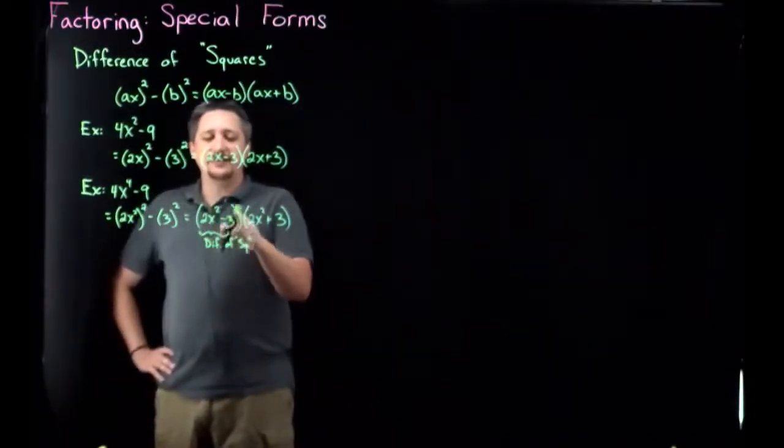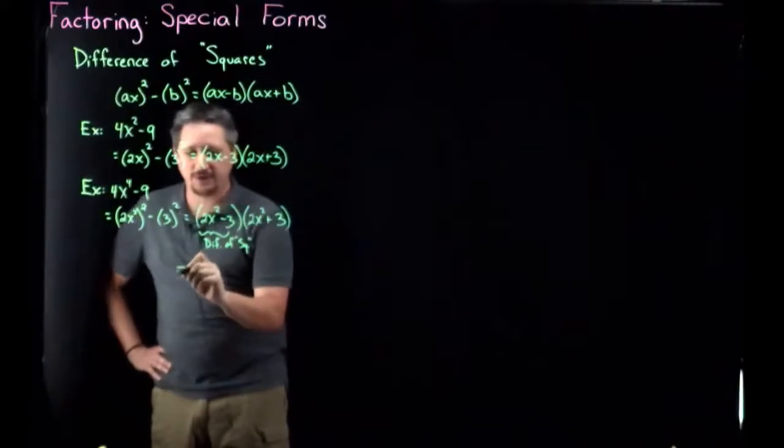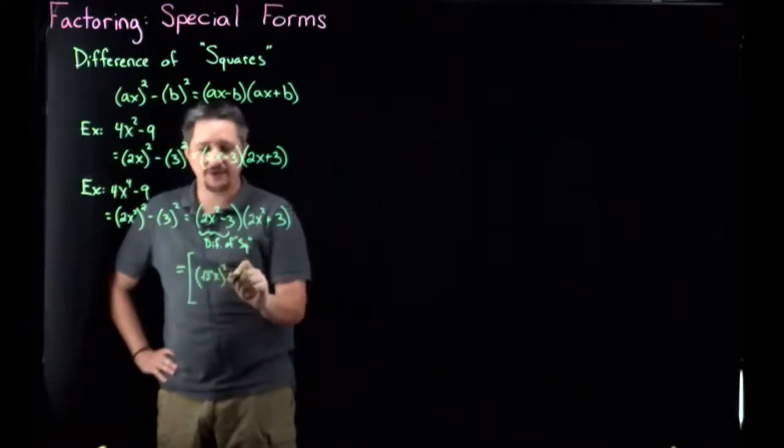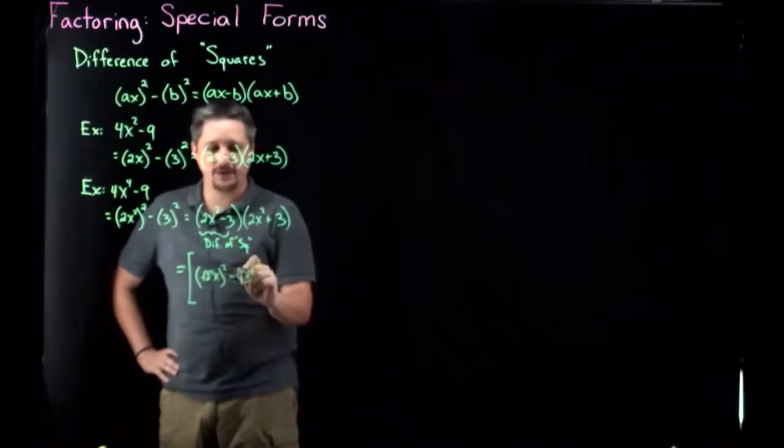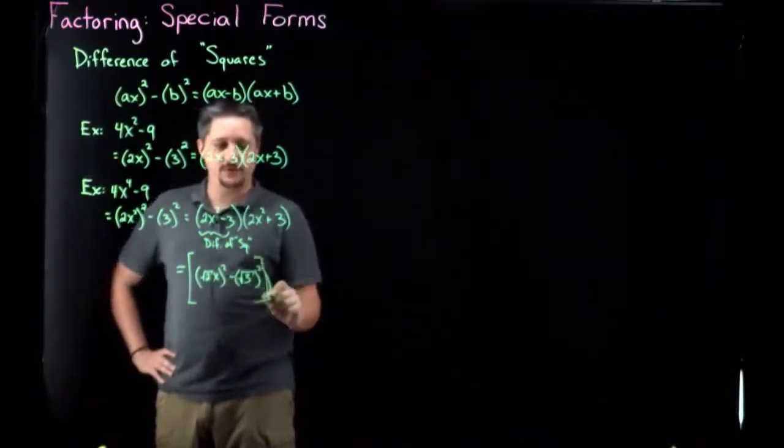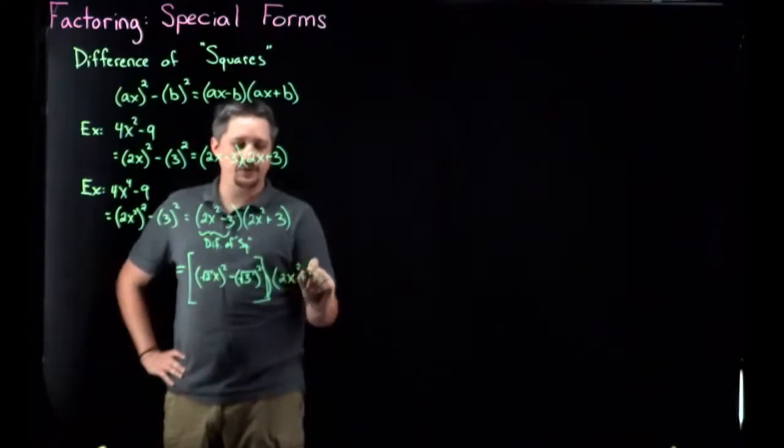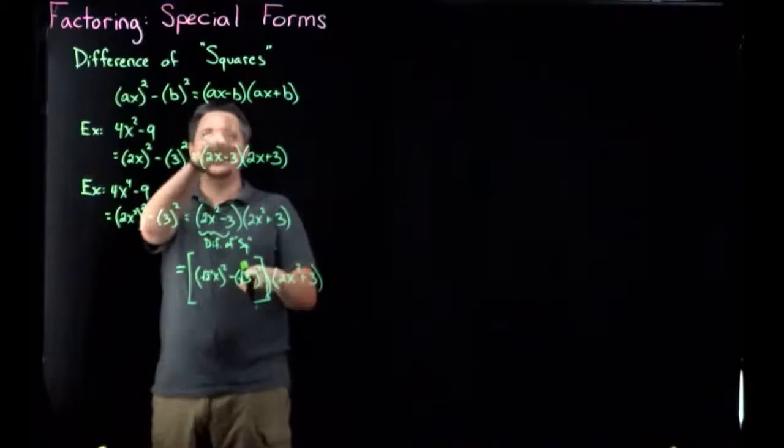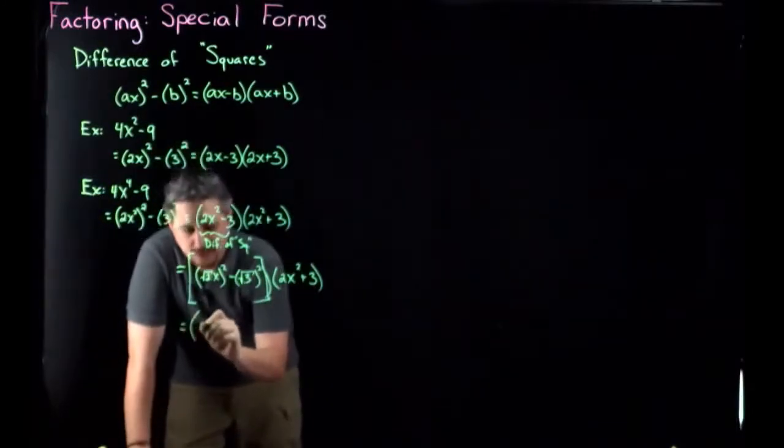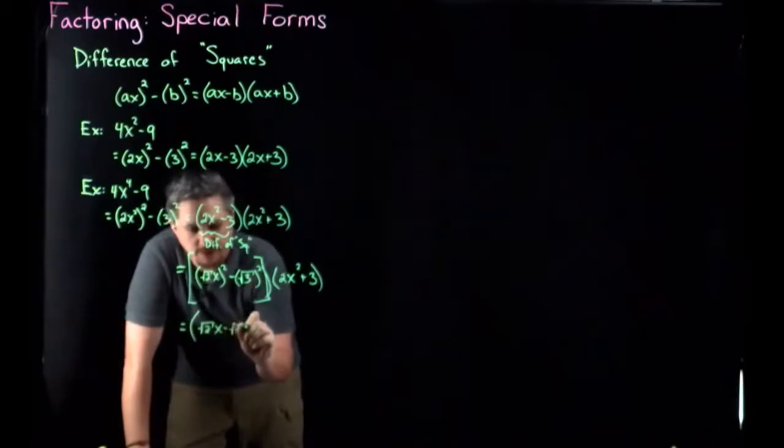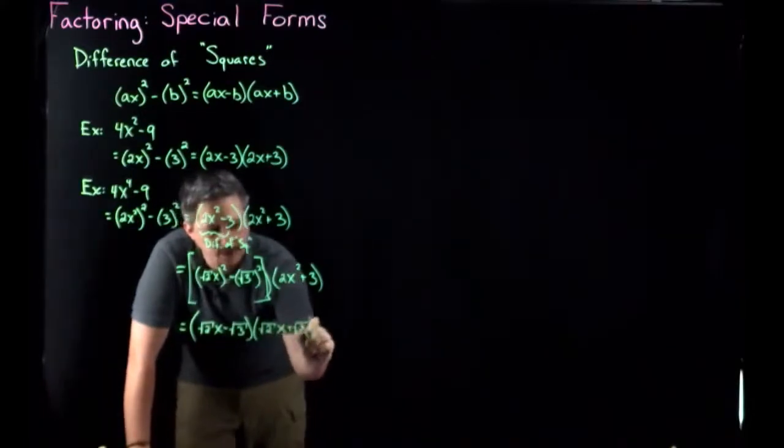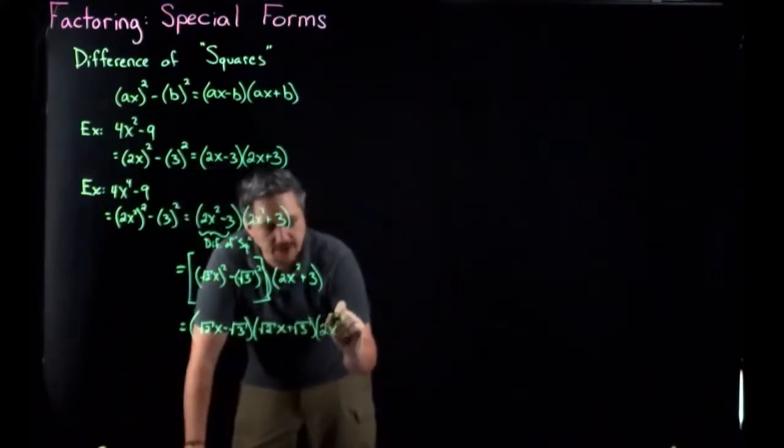So what I have to do is rewrite this as something squared minus something squared. So the way I'm gonna do that is I'm gonna rewrite 2x squared as square root of 2x squared minus square root of 3 squared. And then I still have this 2x squared plus 3 along for the ride. But now I can do my difference of squares where these are the a, x, and b part. So I'm gonna have square root of 2x minus square root of 3, square root of 2x plus square root of 3, and 2x squared plus 3.